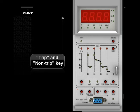Trip and Non-Trip Key: Used for the release test function, and determines whether the breaker needs to be opened or not during the test.